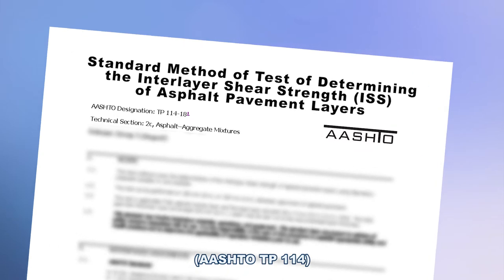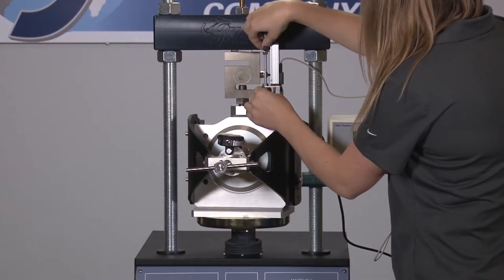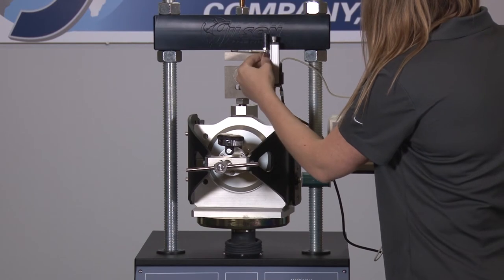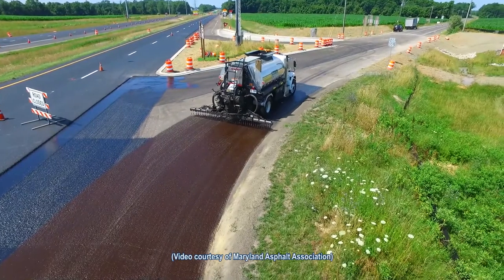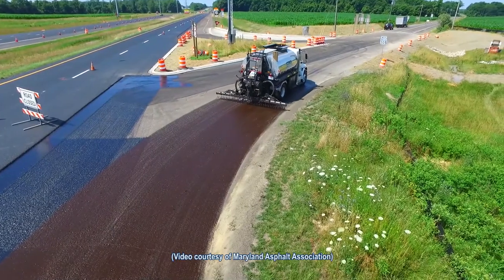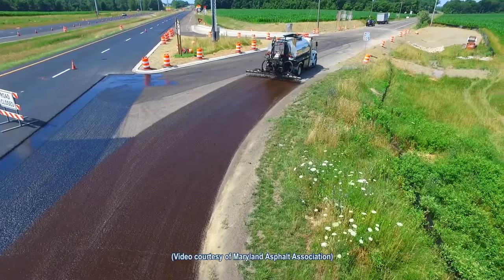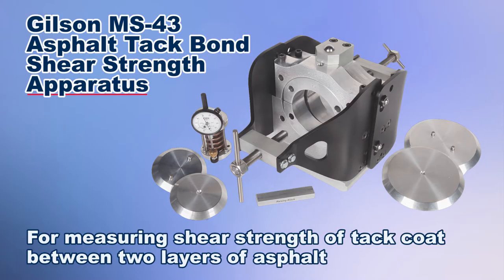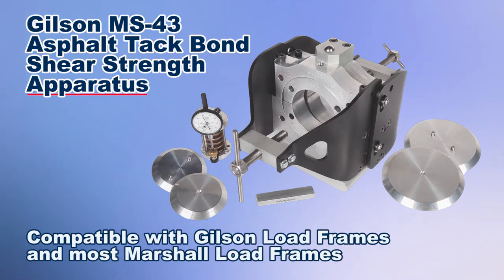The inner layer shear strength test assesses the shear strength of tack coat material between two asphalt sample layers, to develop a predictive model used by practitioners in selecting tack coat types and application rates given field conditions. The Gilson asphalt tack bond shear strength apparatus is designed for such a purpose, using a Marshall stability load frame at a rate indicated in test specifications.